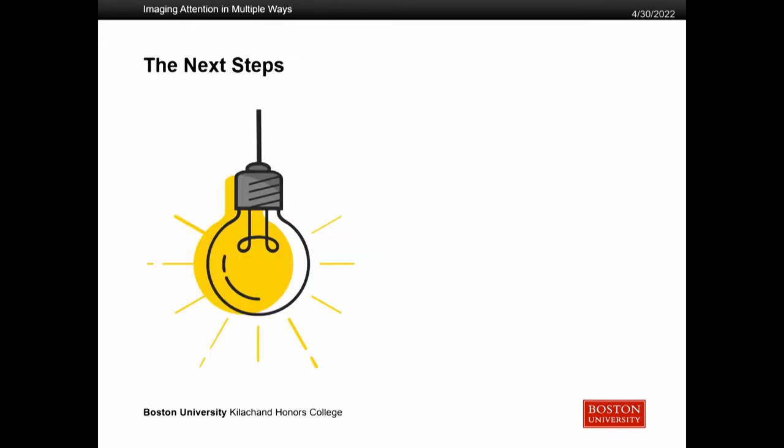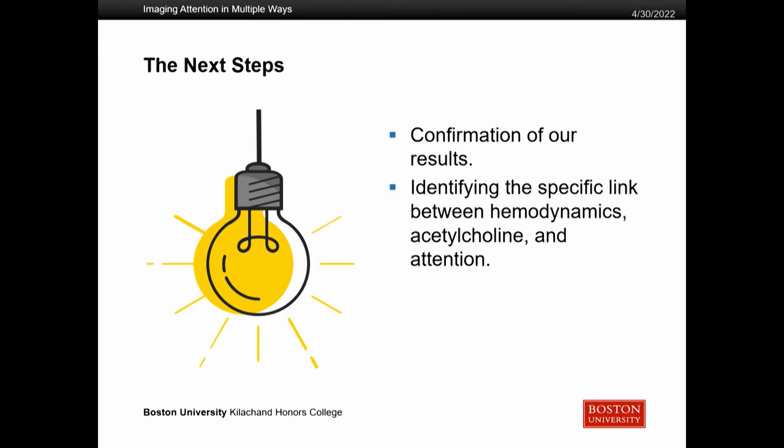What would be the next steps stemming from this project? The biggest thing in science is to confirm these results — we were able to show that these results are true, but can other people replicate this experiment multiple times? More specifically, we want to identify the specific link between hemodynamics, acetylcholine, and attention, because this is what we're using to relate it to our human model. If we establish that specific link, we can then use fMRI as a proxy for studying acetylcholine or differences in attention, and use this as a therapeutic thing for humans.